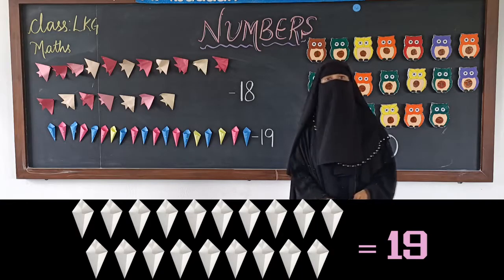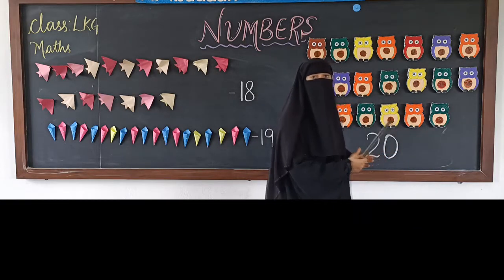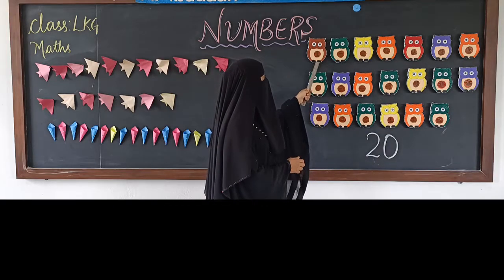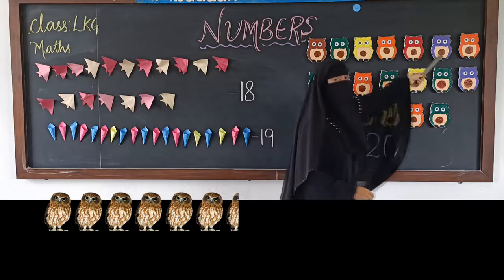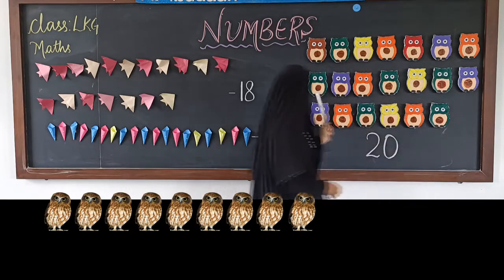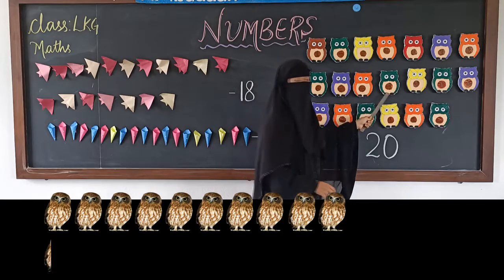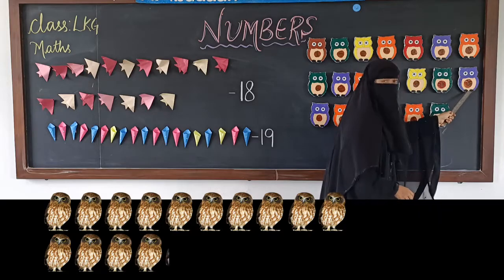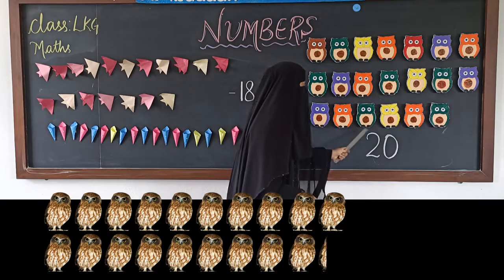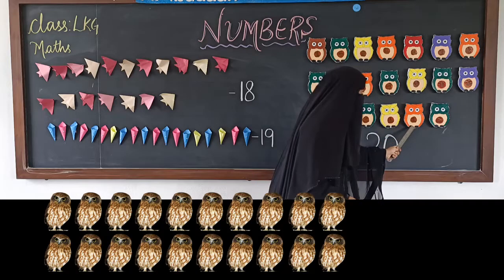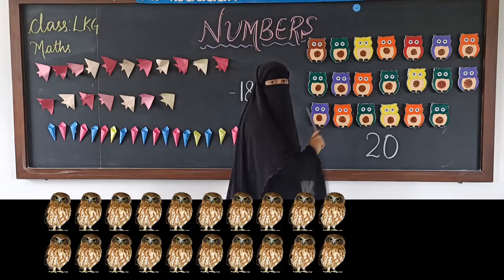Now after 19, let us count how many owls there are — after 19, which number comes? 1, 2, 3, 4, 5, 6, 7, 8, 9, 10, 11, 12, 13, 14, 15, 16, 17, 18, 19, 20.